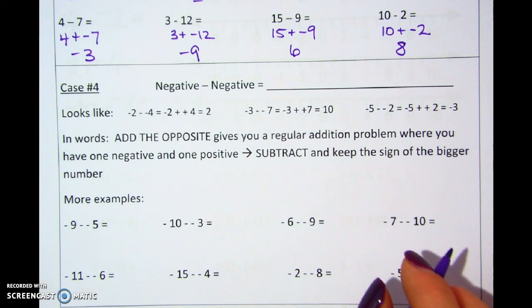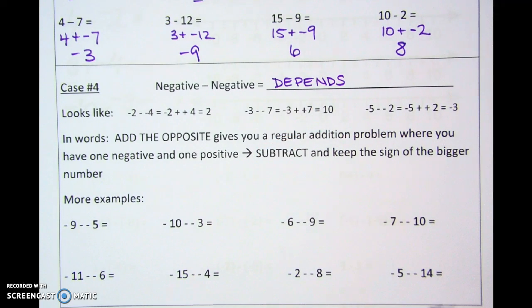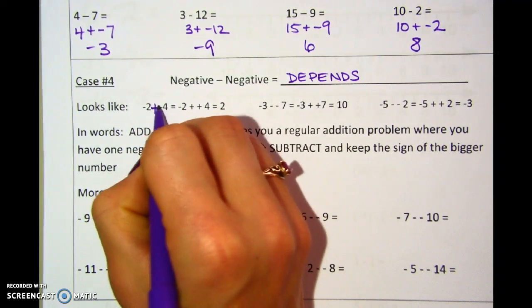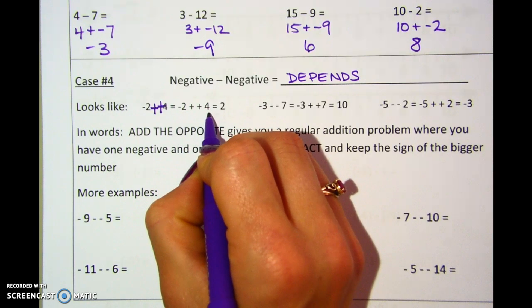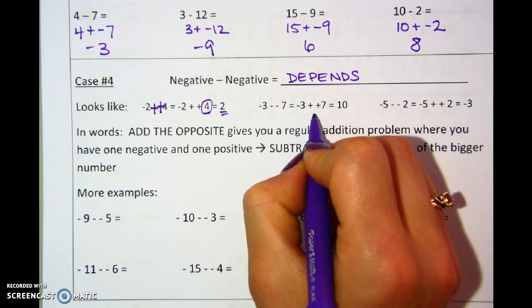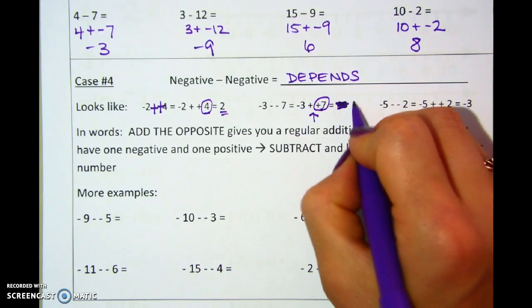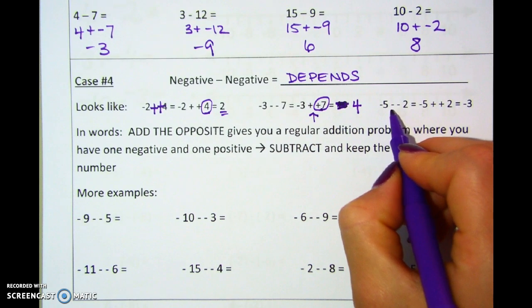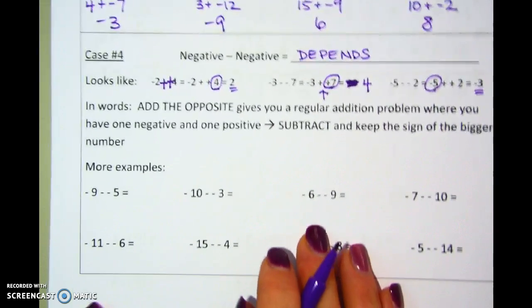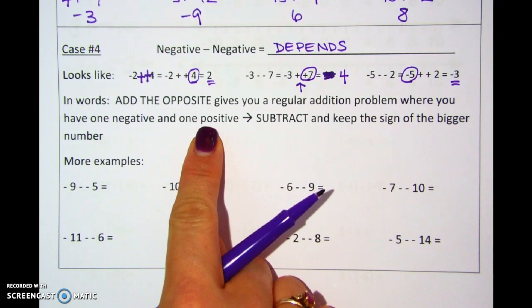The last type of problem you might see is a negative minus a negative — again, that one's going to depend on which one's bigger. Always keep using add the opposite. Negative four minus negative two: if I add the opposite, I get negative four plus positive two — I'm adding a positive and a negative, but the positive is bigger, so I get a positive answer. Negative three minus negative seven: change it to add the opposite — negative three and positive seven — the positive is bigger, so I get four. And negative five minus negative two written as add the opposite gives negative five plus positive two — the negative is bigger, so my answer is negative.